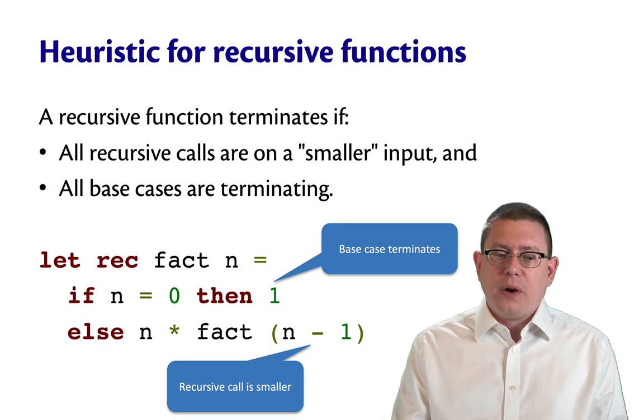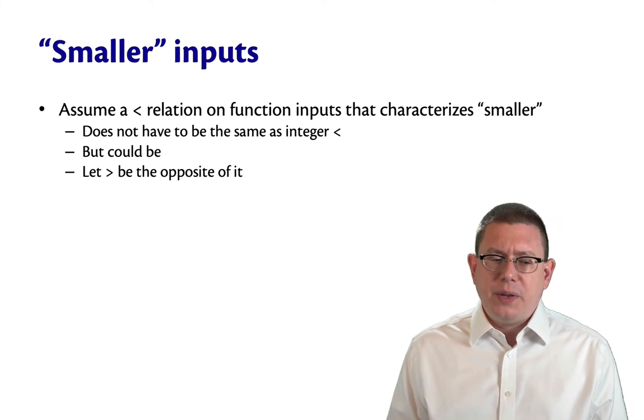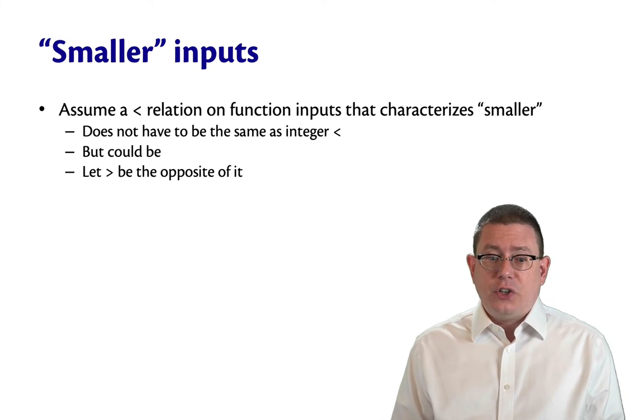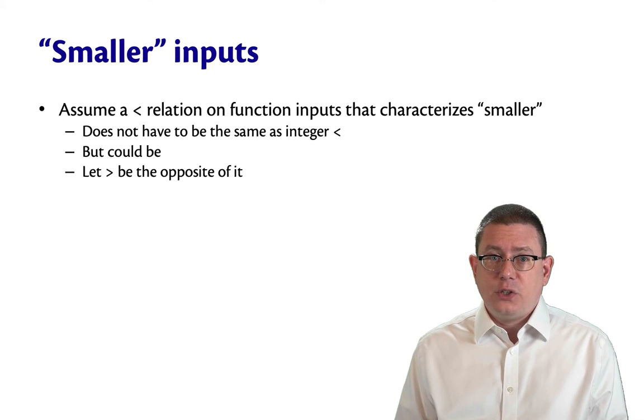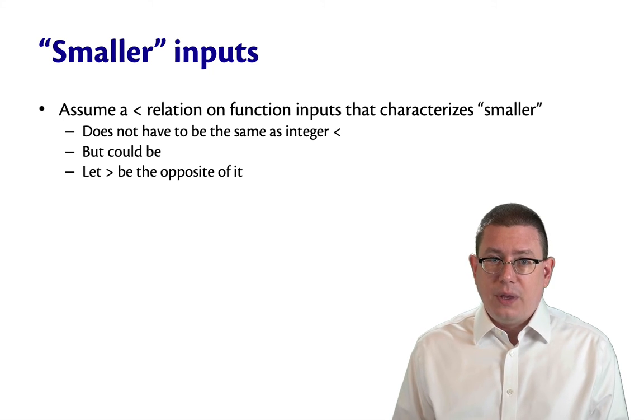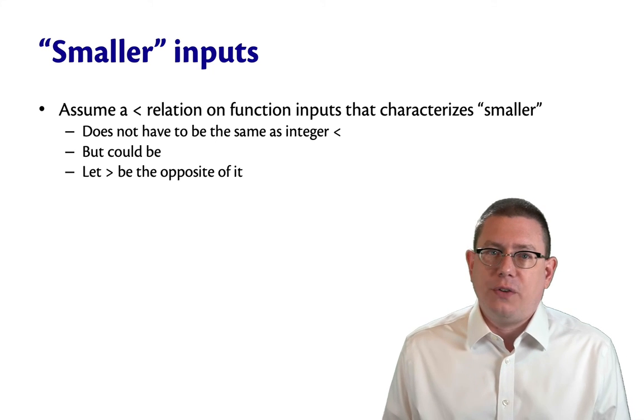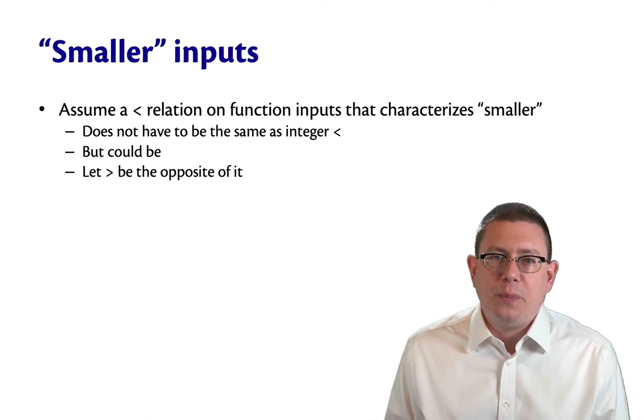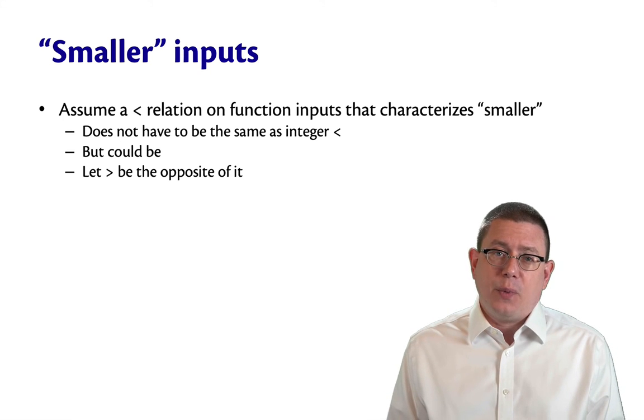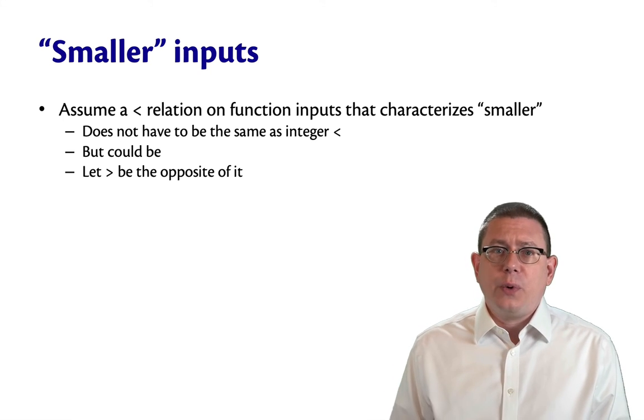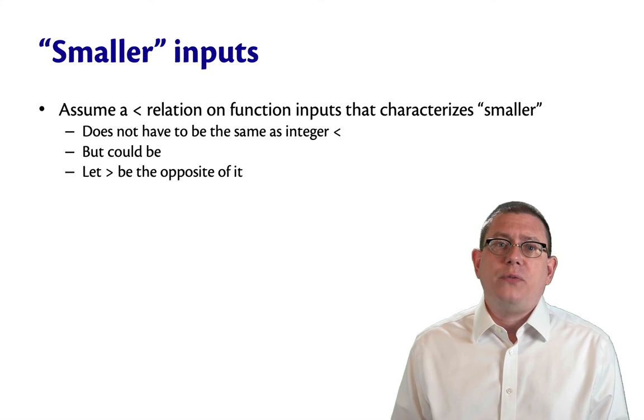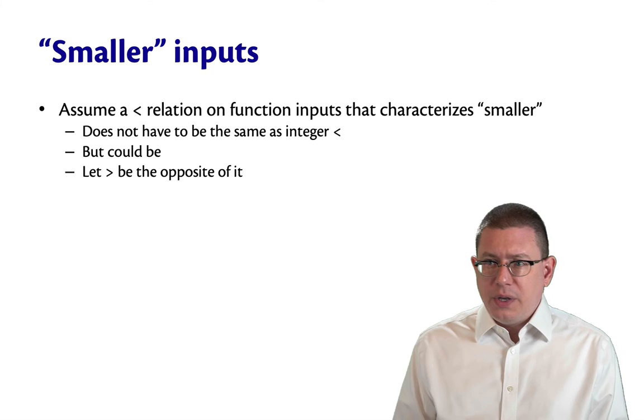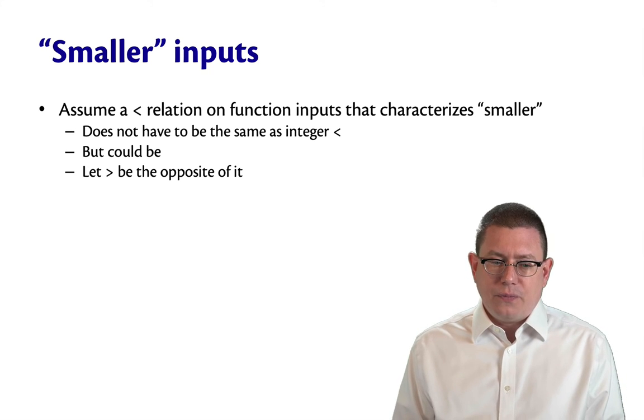Okay, so let's be careful here about smaller and base cases. What are smaller inputs? Let's assume a less than relation on function inputs that characterizes what we mean by smaller. Now, this doesn't have to be the same as the notion of less than on integers or natural numbers or whatever. But it could be if that happens to be the type that we're working with. It wouldn't be if we were working with lists. A smaller list would have maybe one fewer element in it. A smaller tree might have one less node or fewer subtrees in it.